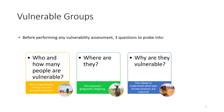Before performing any vulnerability assessment, there are three questions we need to answer. First: who and how many people are vulnerable? This informs decisions about resource allocation. Second: where are they? This improves geographic targeting. Third: why are they vulnerable? This helps in understanding what type of interventions are required and allows us to target interventions at the causes of vulnerability.